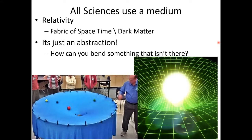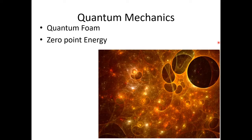Because all sciences use a medium. Relativity has a fabric of space-time and dark matter. And if you want to say, well, that's just an abstraction, how can you bend something that isn't there? Even if you have an abstraction, you're saying that you even need something to fill the emptiness of free space in order to get your equations to work.